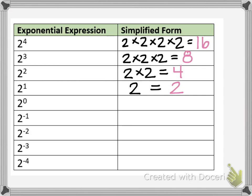The next expression is 2 to the zero power. You want to be careful here — many people quickly think it's just zero, or that 2 times zero equals zero. But I'm not multiplying 2 times zero; I'm taking 2 and raising it to the zero power. In order to figure that out, we need to look at the patterns we've created in the table so far.